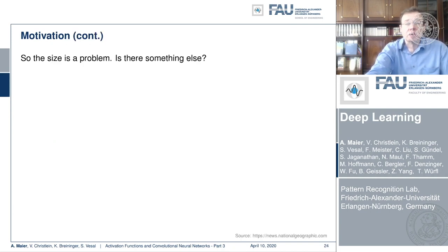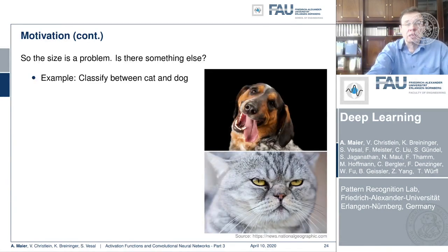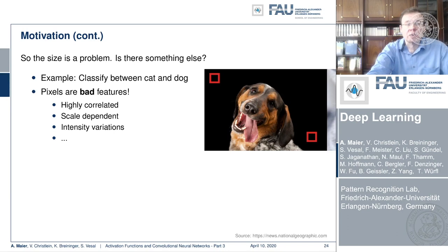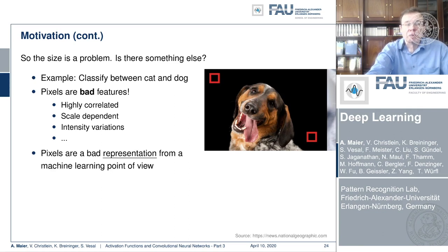This is not the way to go — size is really a problem, and there's more to that. If we want to classify between a cat and a dog, a large part of those images just contains empty areas that are not very relevant. Pixels in general are very bad features: they're highly correlated, they're scale dependent, they have intensity variations. So pixels are a poor representation from a machine learning point of view.